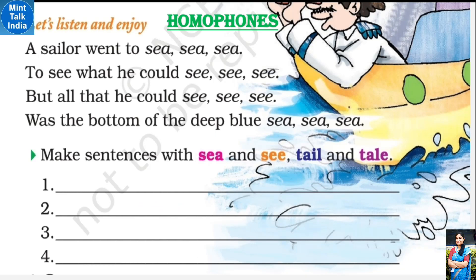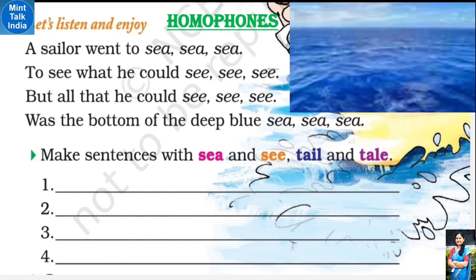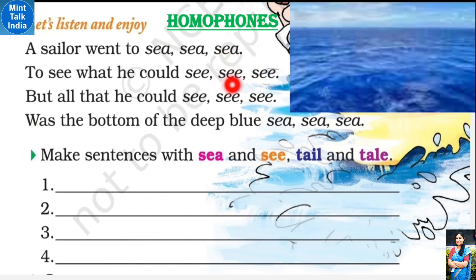Then we will study about homophones - woh kya hota hai chaliye padhte hain. A sailor went to sea - S-E-A - jiska matlab hota hai samundar - to see what he could see - S-E-E - yeh dekhne ke liye ki use samundar mein kya nazar aata hai. 'See' - S-E-E - ka matlab hota hai dekhna, nazar aana. Toh yeh jo samundar wala 'sea' hai aur dekhne wala 'see' hai, yeh dono sunne mein ek jaise lagte hain. Aise words jo sunne mein ek jaise lagte hoon, unhe hum kehte hain homophones.